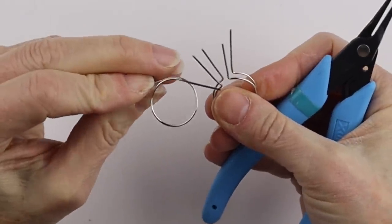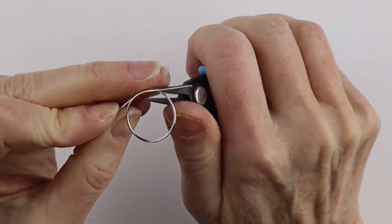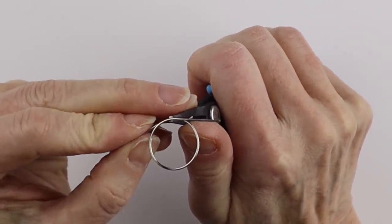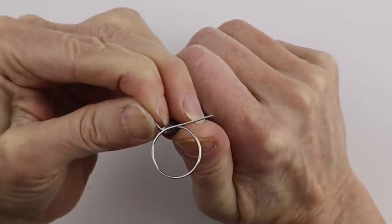We're going to bend one of the ends up, the shorter end. So we're just going to bend this a little bit shorter here so we have an end to wind around.